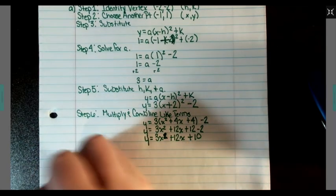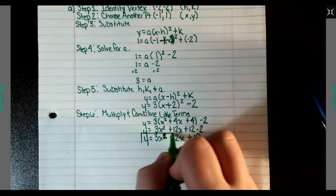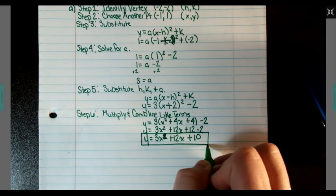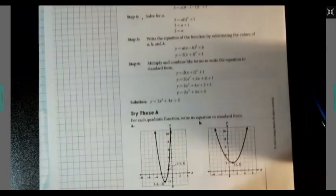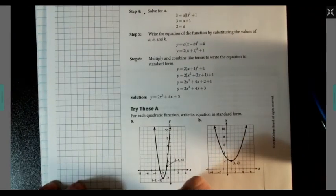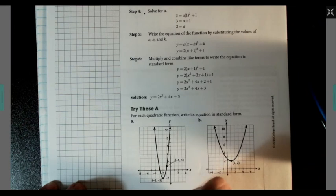All right. My final answer here would have been this line right here. Y equals 3X squared plus 12X plus 10.